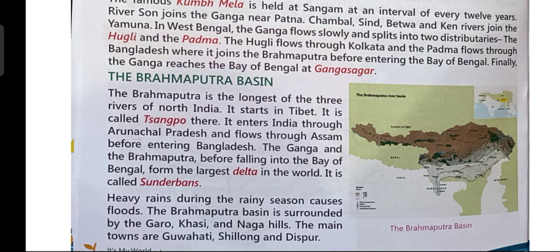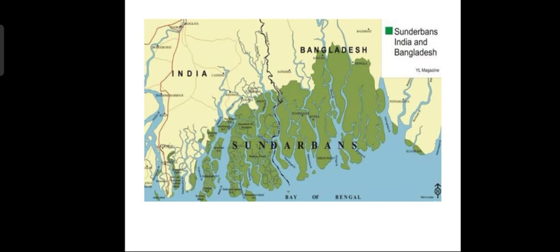Heavy rains during the rainy season cause floods in the Brahmaputra. The Brahmaputra basin is surrounded by Garo, Khasi, and Naga hills. The main towns are Gohati, Shillong, and Dispur. This green-colored portion you can see is the Sundarbans delta — the largest delta in the world, formed by river Ganga and river Brahmaputra.